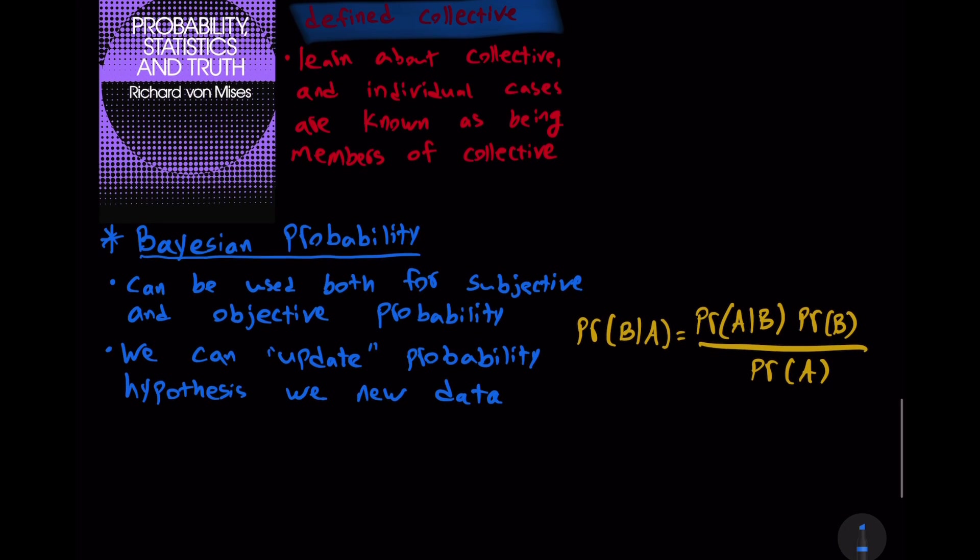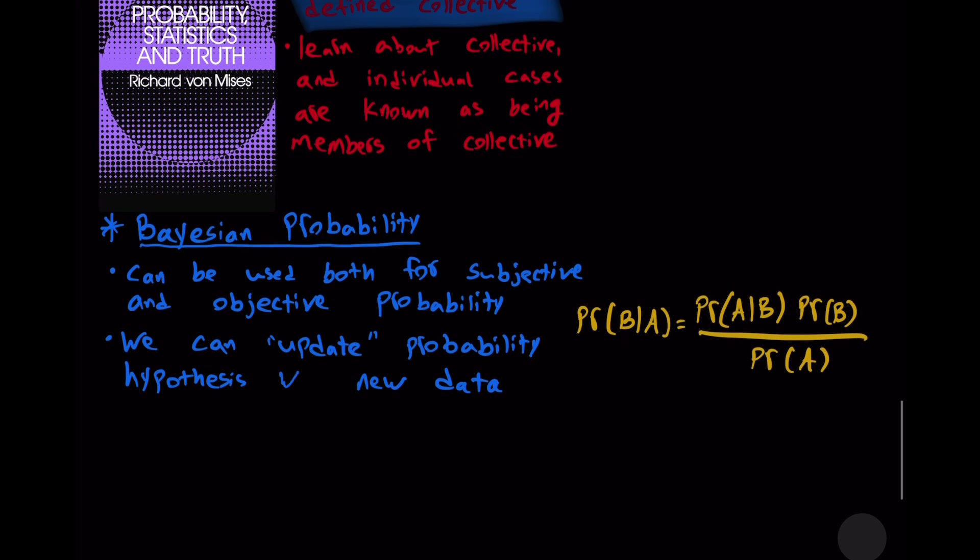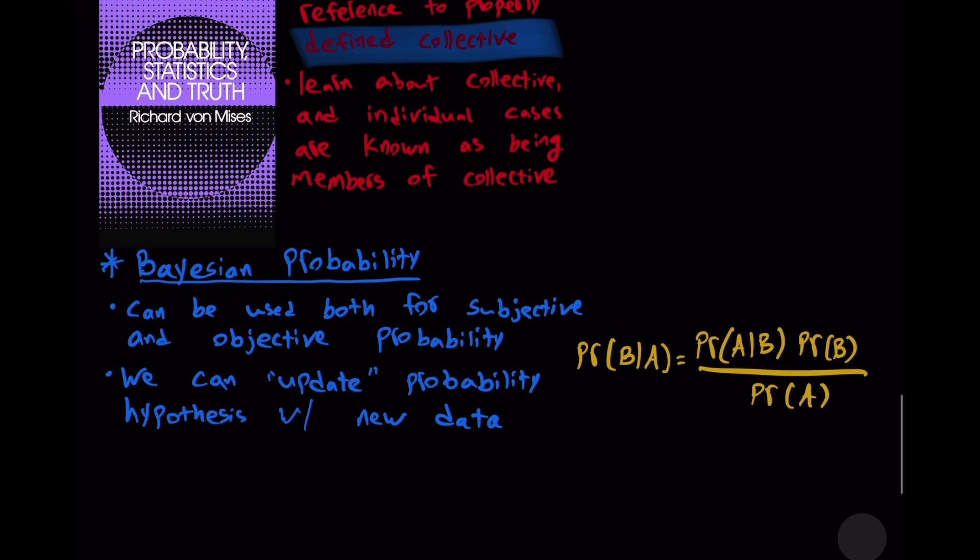And then we have Bayesian probability. Again, we can only just skim this right now. And this can be used both for subjective and objective probability. And we can use it to update a probability hypothesis with new data. We can think of it in terms of the probability A exists because B caused it, or the probability of B given evidence A. And there's this famous formula. The interesting thing about this is that many philosophers have used this type of reasoning to think about and consider different types of theories and to say which theory is more plausible or probable.